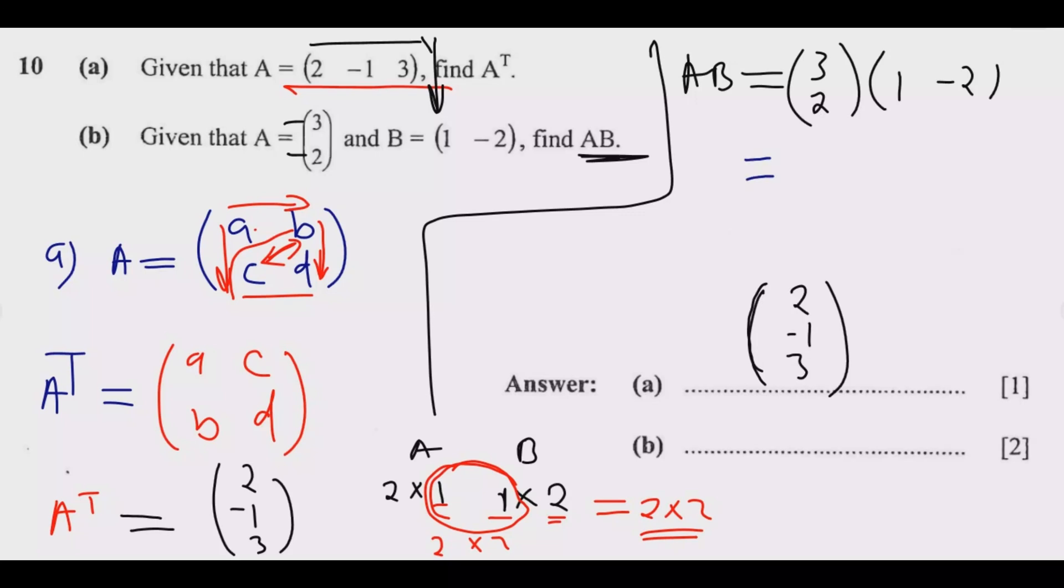Now start multiplying. It will be 3 multiplied by 1—that's the first one. Then it will be 3 multiplied by -2.